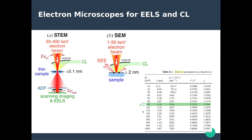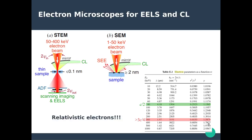Typically EELS is done at 80 kiloelectron volts, which is about half the speed of light. You can calculate the de Broglie wavelength and see you're in the picometer range — very small compared to optical excitations. You can also calculate the relativistic gamma factor and see relativistic effects starting to appear. EELS can also be done at 300 kiloelectron volts — 75 percent of the speed of light — giving much better spatial resolution but with very significant relativistic effects. The electrons we are looking at are actually relativistic.